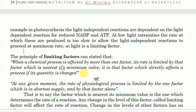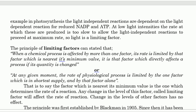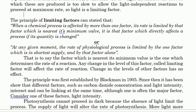In the principle of limiting factor, some teachers may ask you to state it in an exam. When a chemical process is affected by more than one factor, its rate will be limited by that factor which is nearest its minimum value. Alternatively, you can state: at any given moment, the rate of a physiological process is limited by the factor which is in shortest supply, and by that factor alone. That factor nearest its minimum value is the one which determines the rate of reaction, and any change in the level of this limiting factor will affect the rate of reaction, while a change in any other factor has no effect.